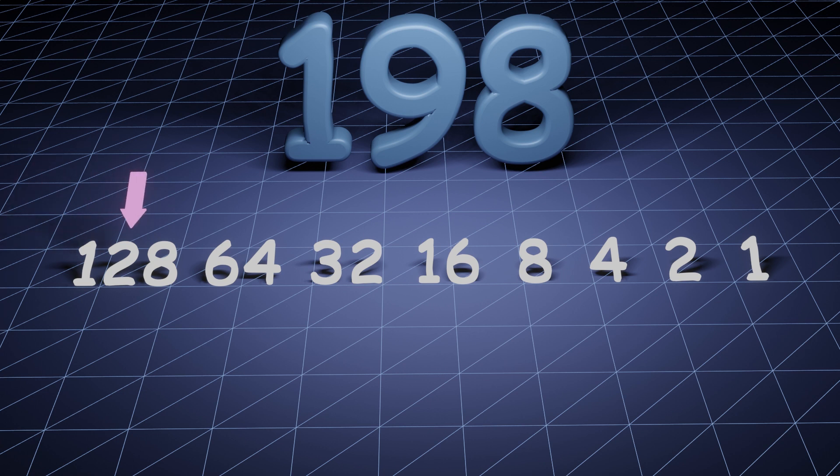Let's start with the highest number in our sequence. We can add this to our sum since 128 is less than 198. In this case we can add a binary 1 below this number.